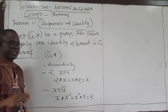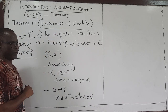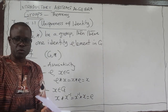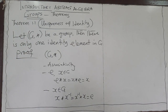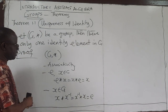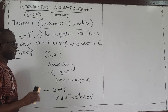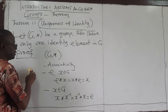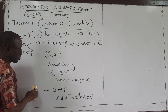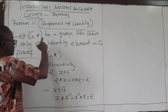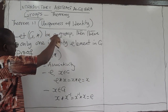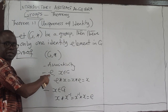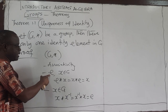We'll be using the definition of groups a lot, and some of the things we've learned in abstract algebra about binary operations. So, this first theorem says that if you have a group, the identity element is unique — there is only one identity element in the group.